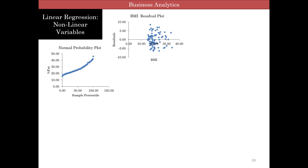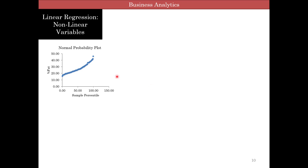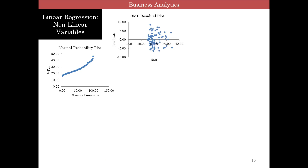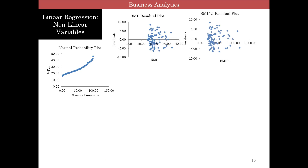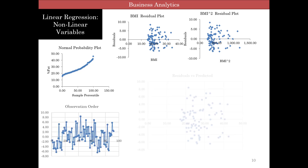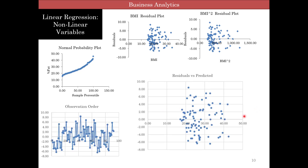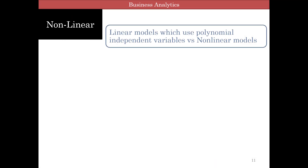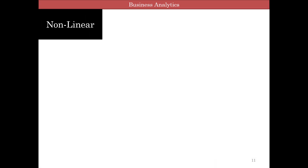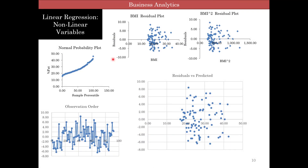Looking at the different plots: the normal probability plot was nonlinear with a little bit of an exponential curve. But the residuals versus observation order and versus predicted values look fine. This essentially shows us linear regression with nonlinear variables.